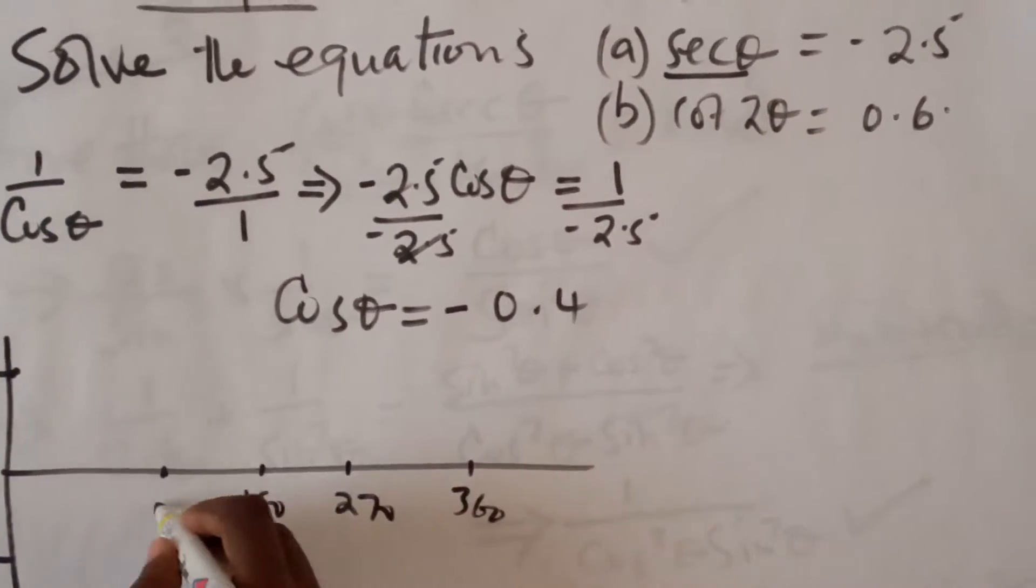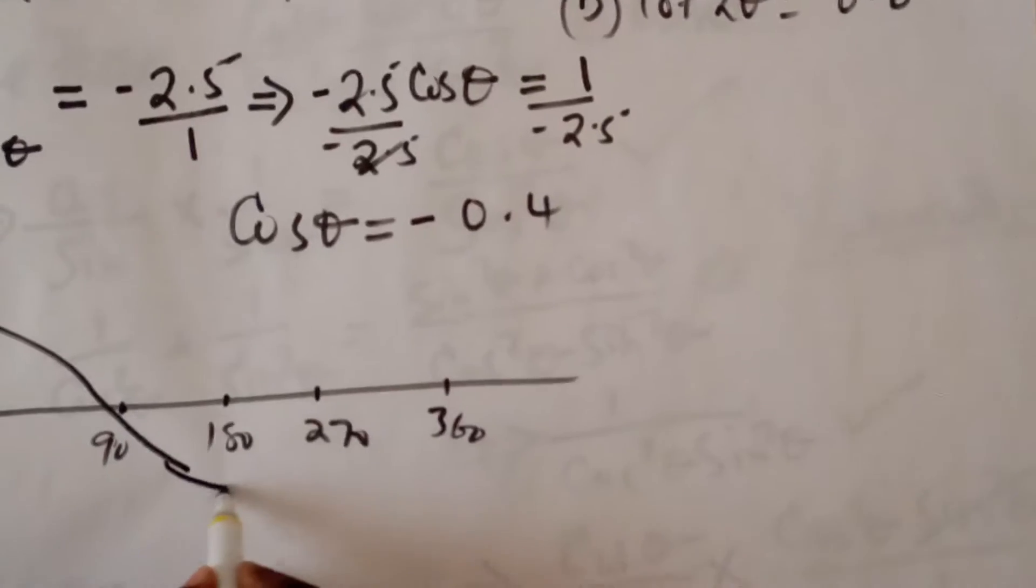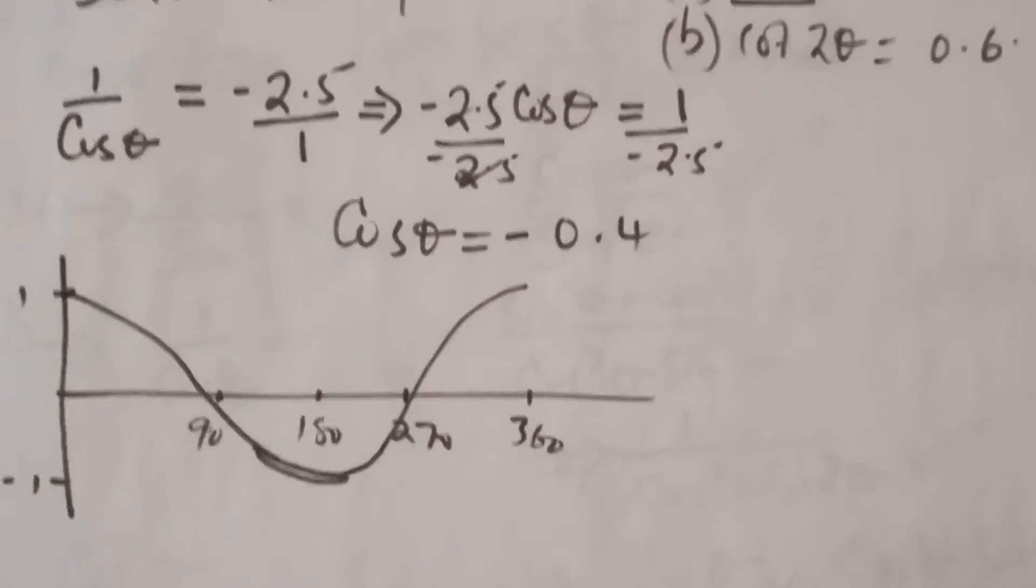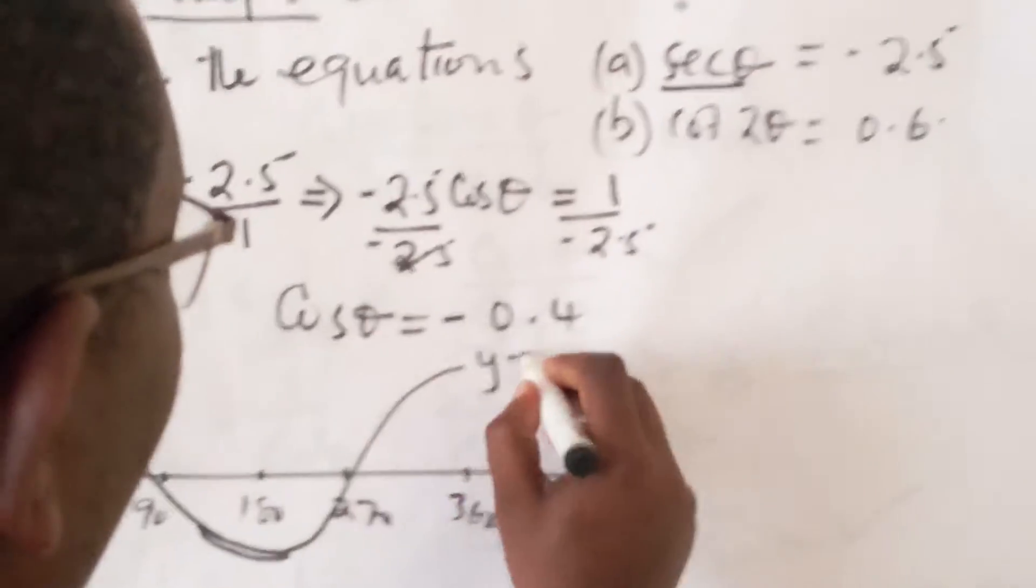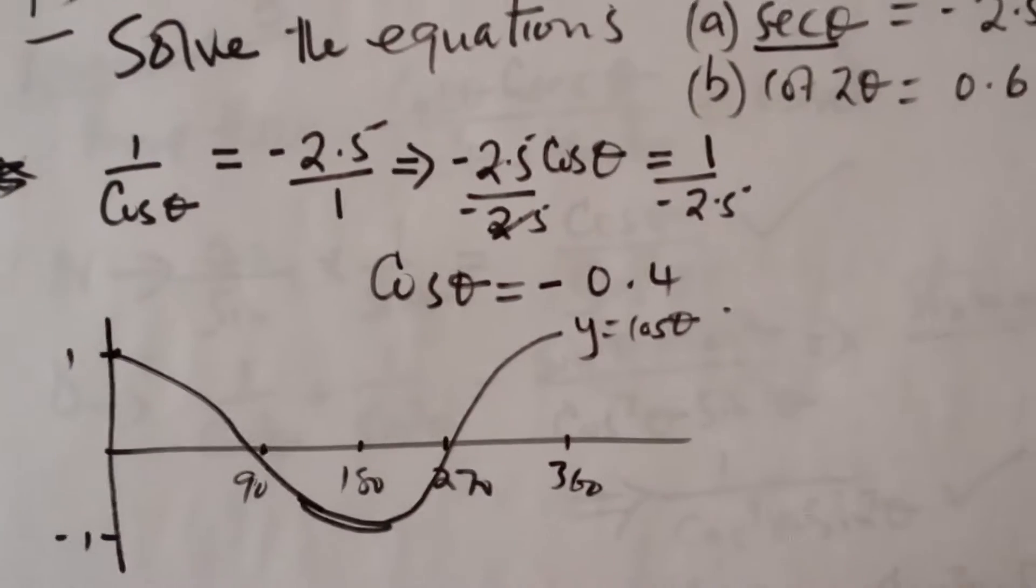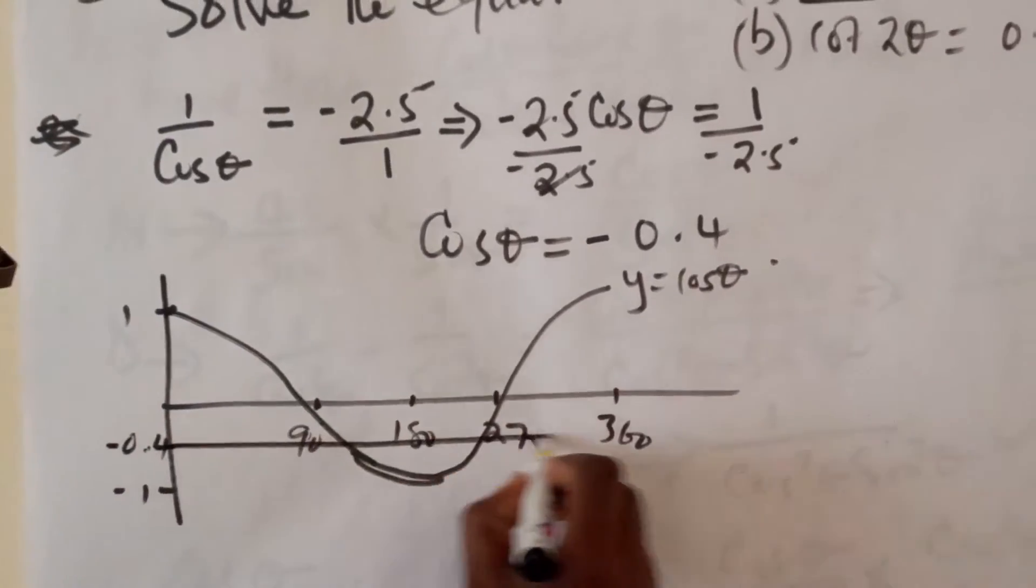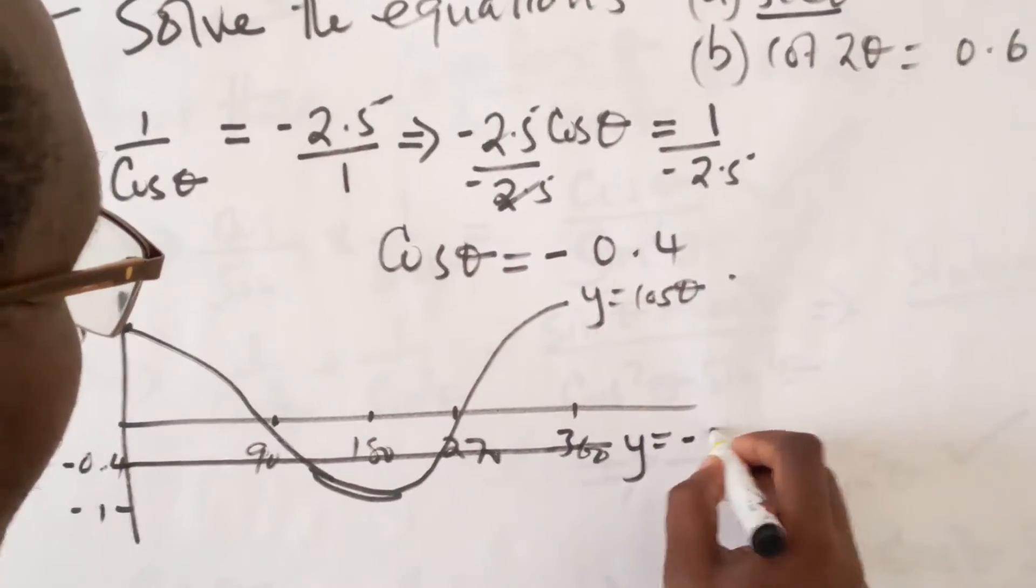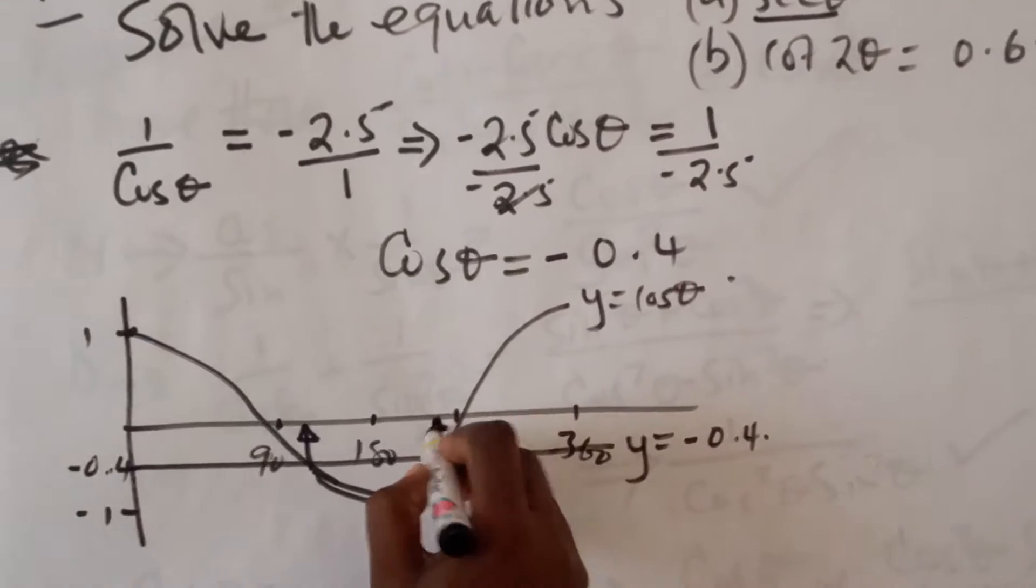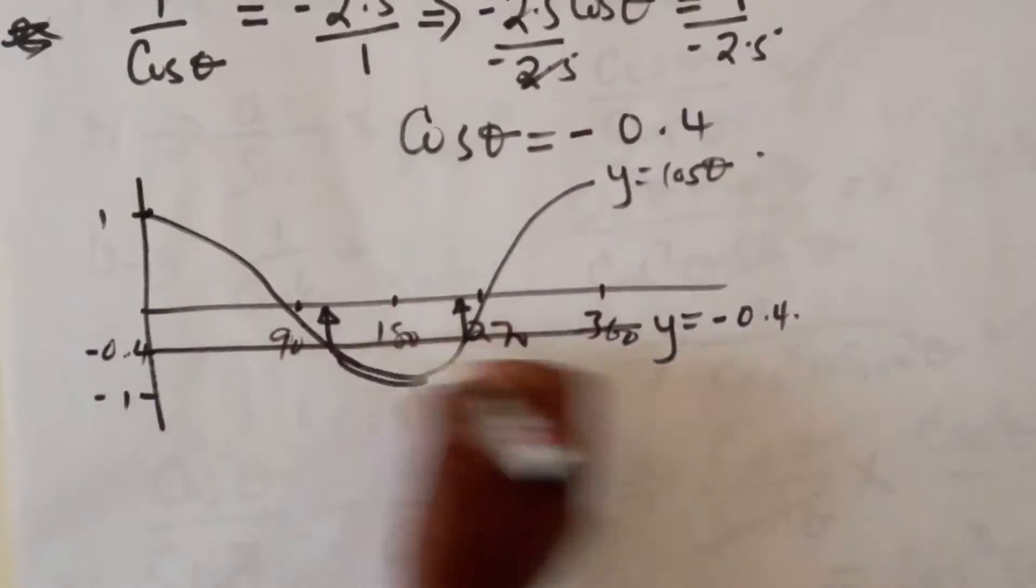We have a graph that looks like this. That is the graph of y equals cosine of theta. When it equals negative 0.4, we have to identify negative 0.4 and draw a straight line there and call it y equals negative 0.4. At the point of contact or intersection, those are the possible values of x at the point of intersection.